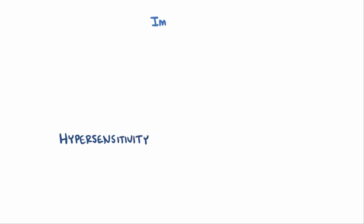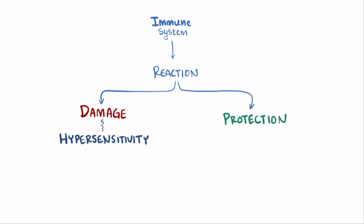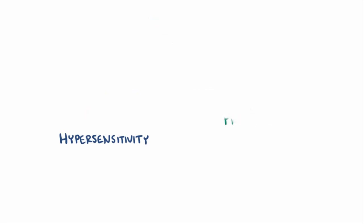Having a hypersensitivity means that someone's immune system has reacted to something in such a way that it ends up damaging them, as opposed to protecting them. There are four different types of hypersensitivities, and in the first type, or type 1...